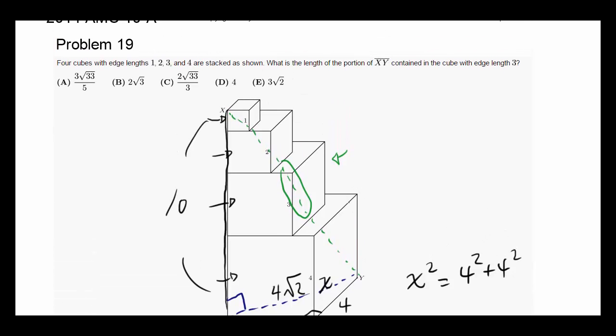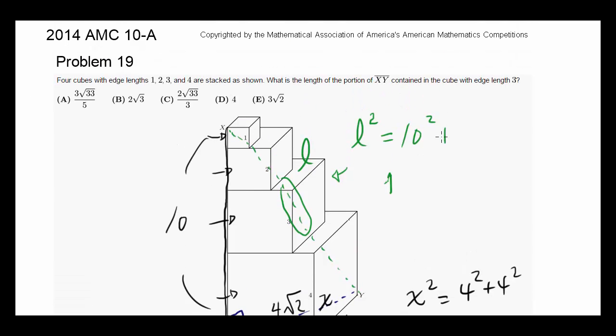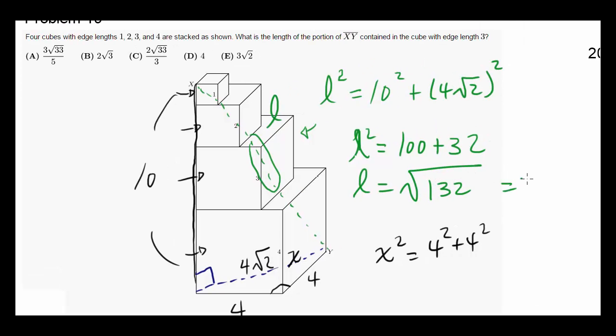Now, what's the length of this green? Well, let's let this length be L, and we know by the Pythagorean theorem, L squared has to be 10 squared plus 4 times square root of 2 squared, which tells us that L squared is 100 plus 32. So L is going to be square root of 132, or 2 times square root of 33.